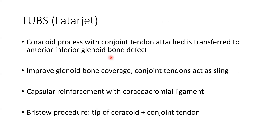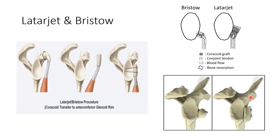The Latarjet procedure involves transferring the coracoid process with its conjoined tendon — the short head of biceps and coracobrachialis muscles — to the anterior inferior glenoid bone defect. This improves glenoid bone coverage, and the conjoined tendon acts as a sling. The difference between Latarjet and Bristow: Bristow takes only the tip of the coracoid; Latarjet takes the whole coracoid process. In the diagram, Latarjet shows the whole piece of coracoid screwed parallel to the glenoid, while Bristow uses just the tip with one screw.